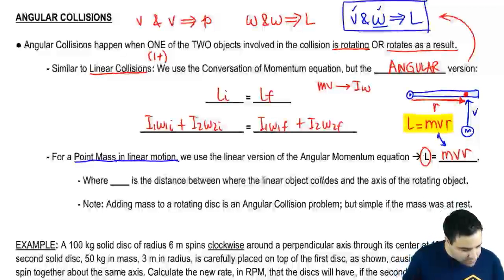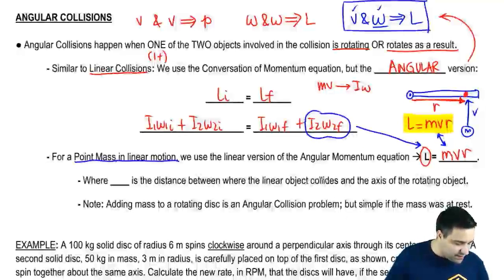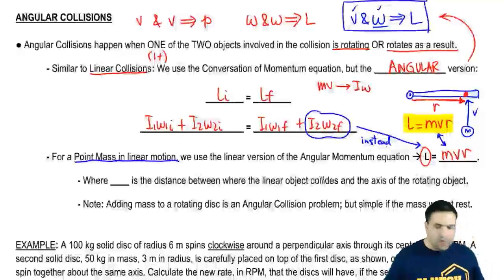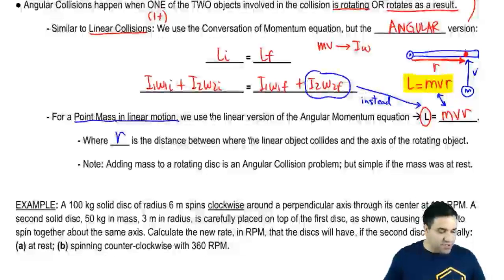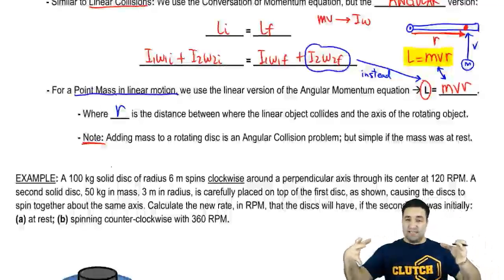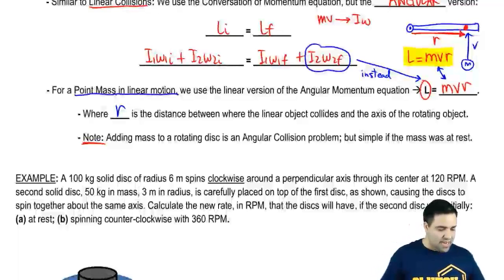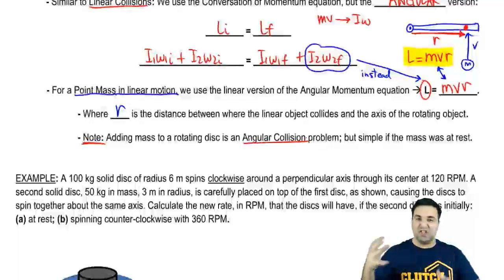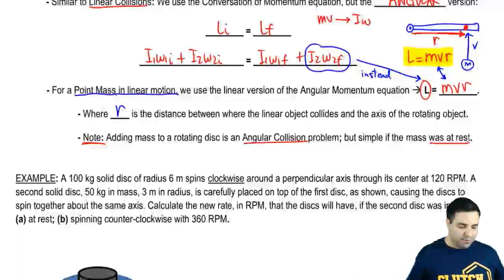L = MVR is what we use. For that object, instead of using I·omega, you use L = MVR. In this equation, r is the distance between where the linear object collides and the axis of the rotating object — it's the r vector between those two points. Also worth noting: if you have a rotating disk and you add mass to it, that is technically an angular collision problem, though we could solve it using conservation of angular momentum. These problems are simpler if the added mass was initially at rest.